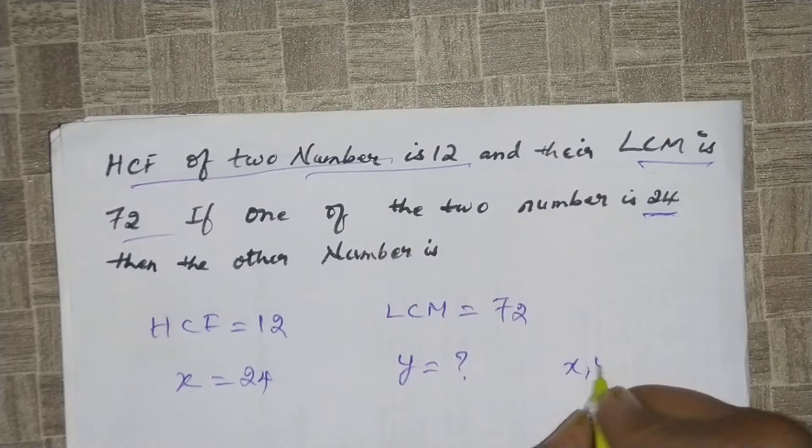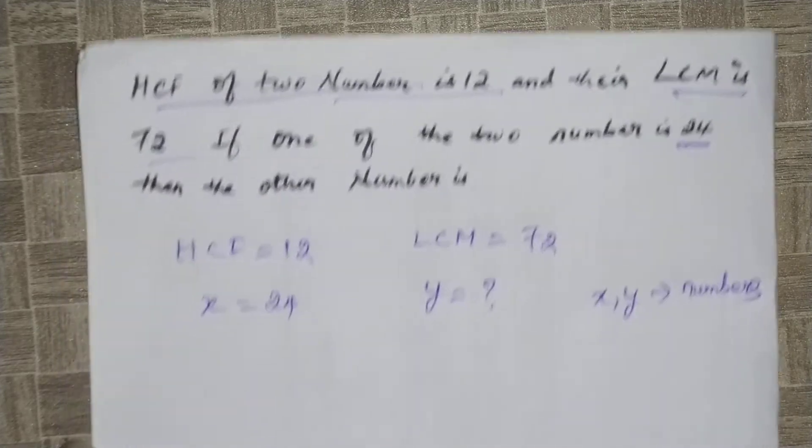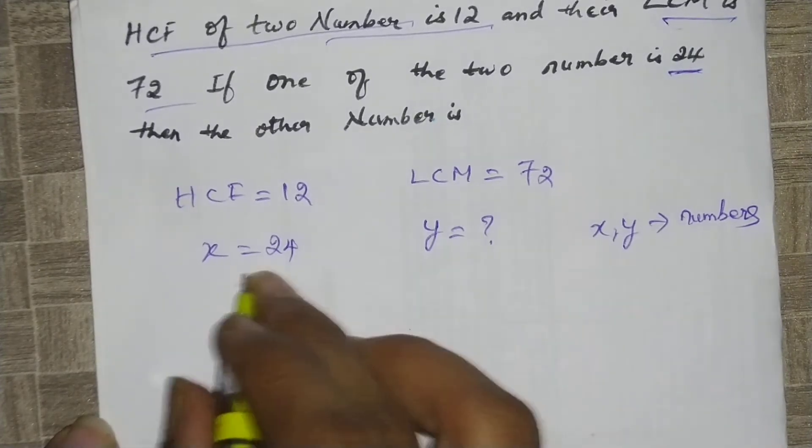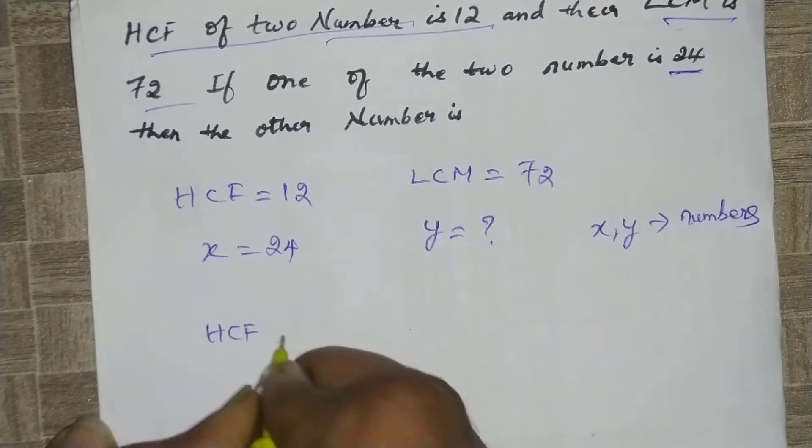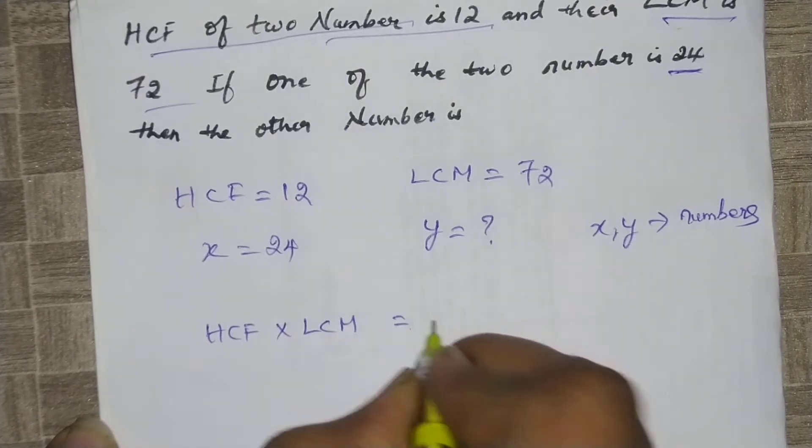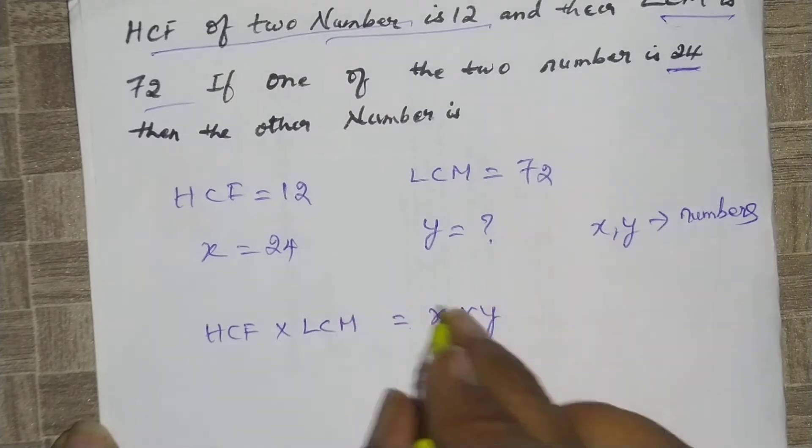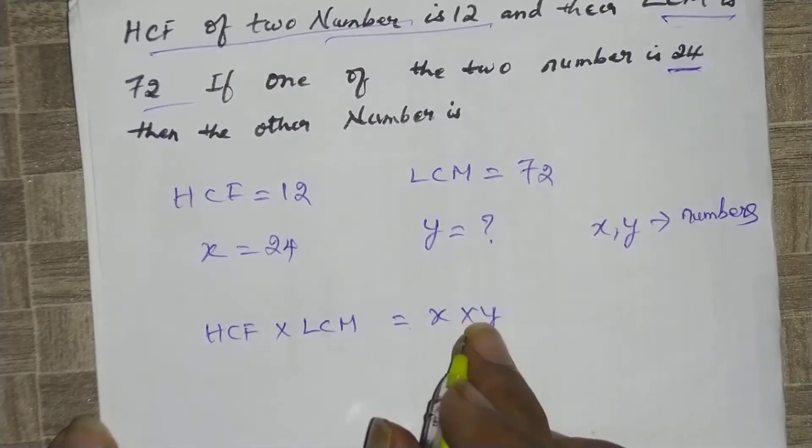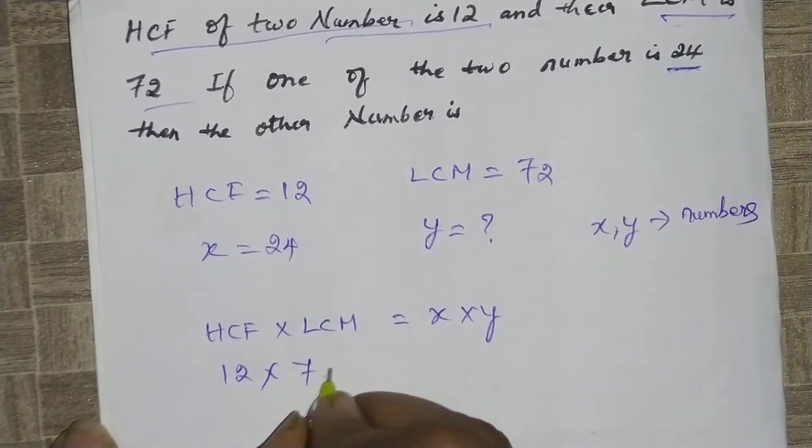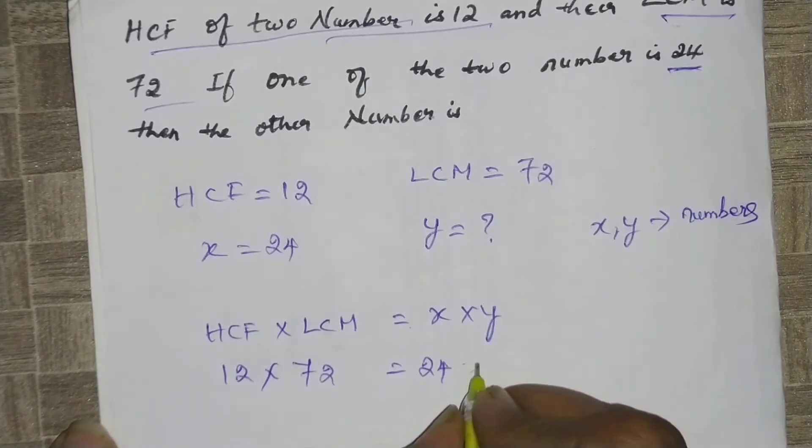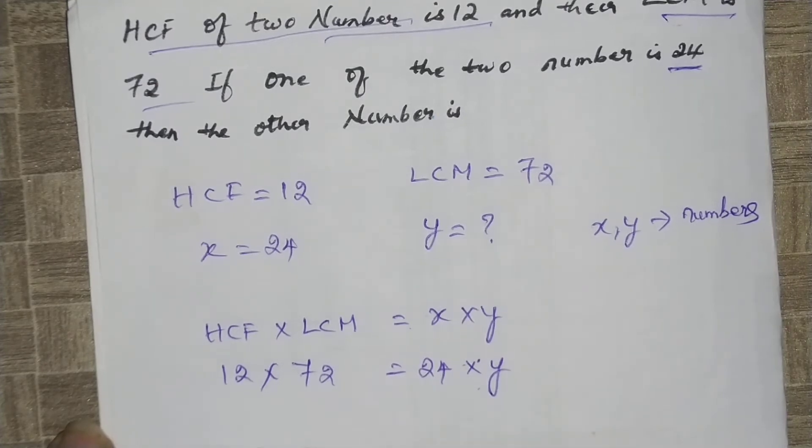Then we have to find the other number. Let x and y be the numbers. Next we apply the formula of HCF and LCM by fundamental theorem of arithmetic. HCF times LCM equals x times y. We substitute the values: 12 times 72 equals 24 times y.